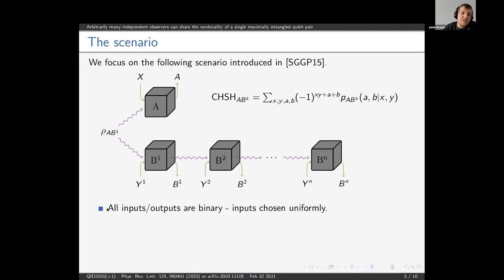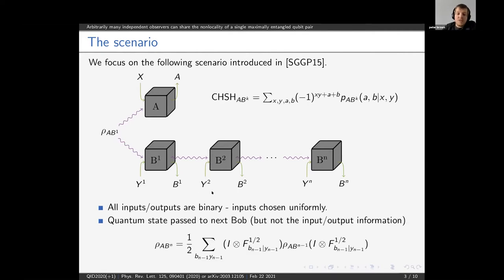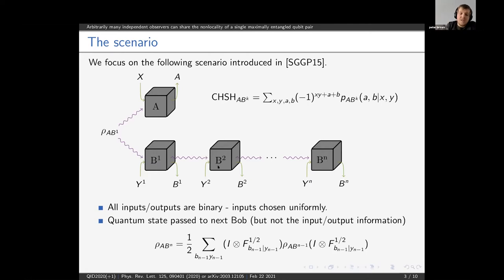In particular, all of the inputs and outputs of the devices in this scenario are binary, and we also assume that the input distribution is chosen uniform. We also make a restriction on the Bobs: we assume that the only information passed from one Bob to the next is the post-measurement state. In particular, Bobs later in the sequence don't know the inputs and outputs of the previous Bobs.